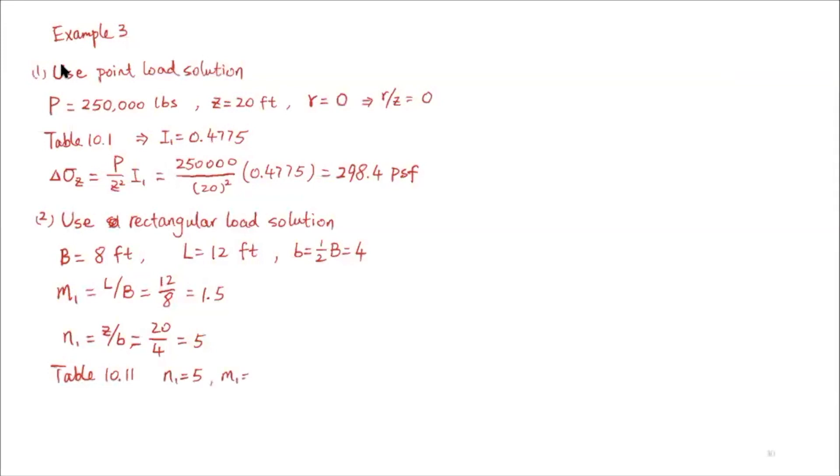For M1 equals 1, we have one I4 value. For M1 equals 2, we have another I4 value. We interpolate to find the actual I4 value that corresponds to M1 of 1.5.